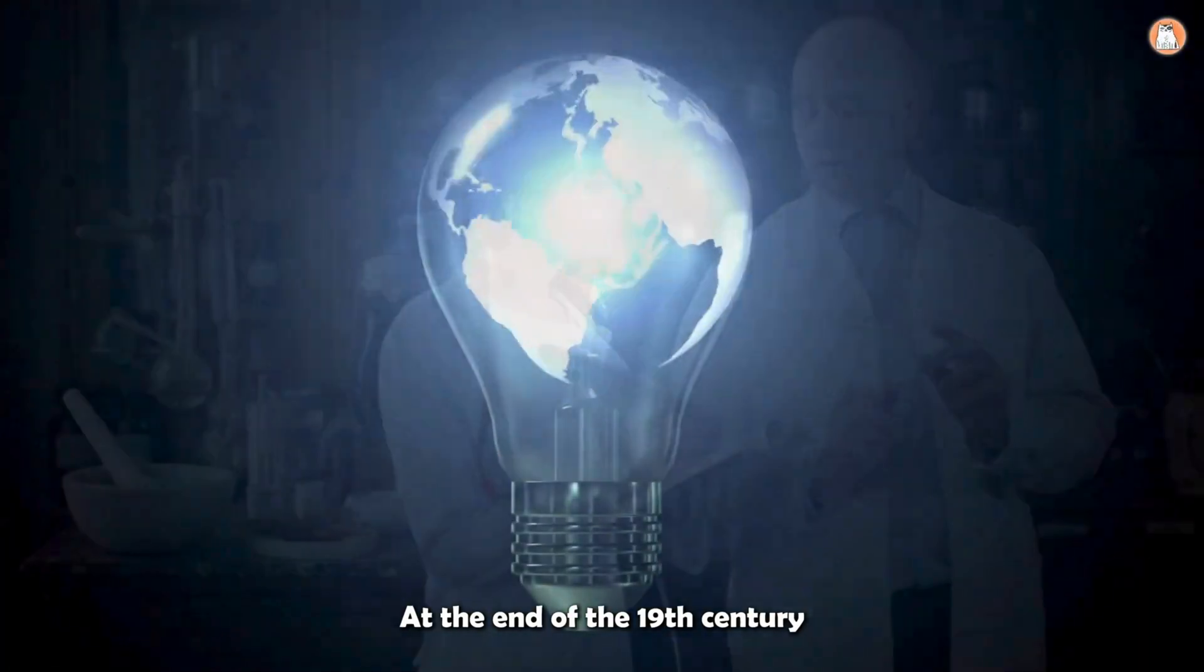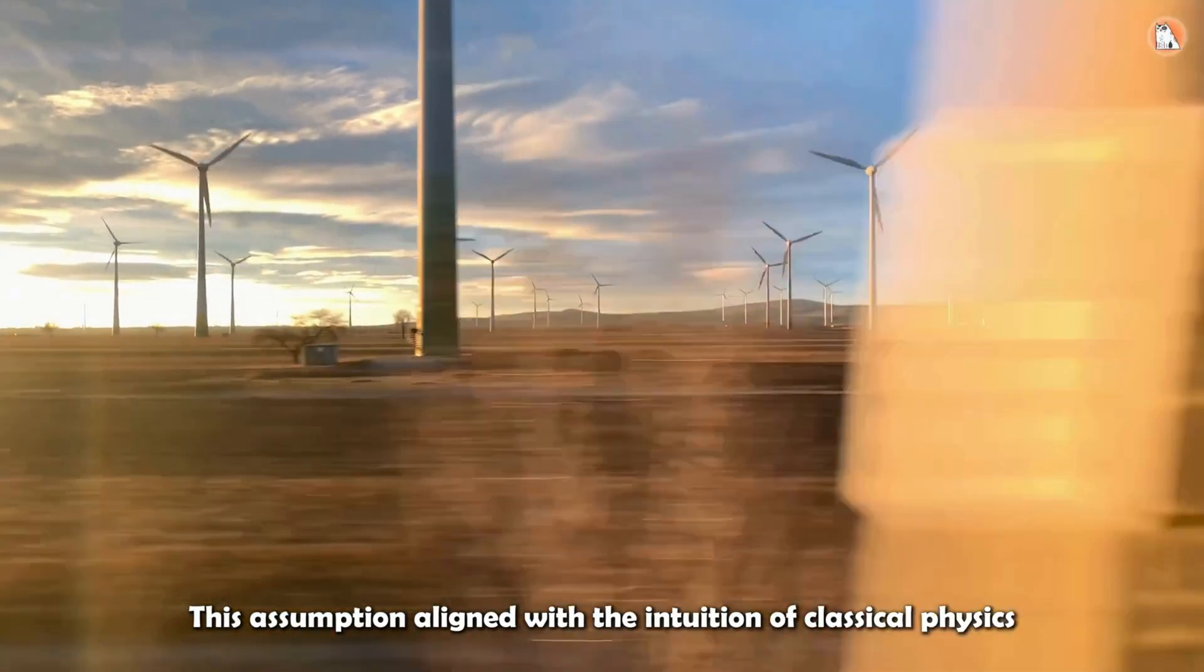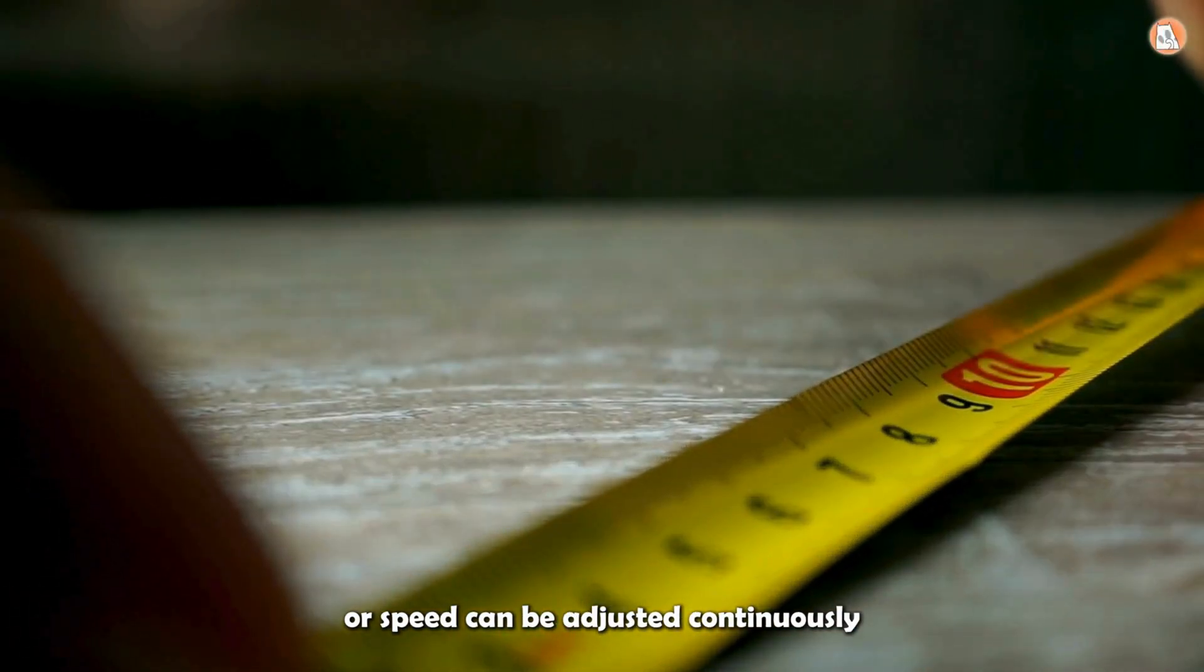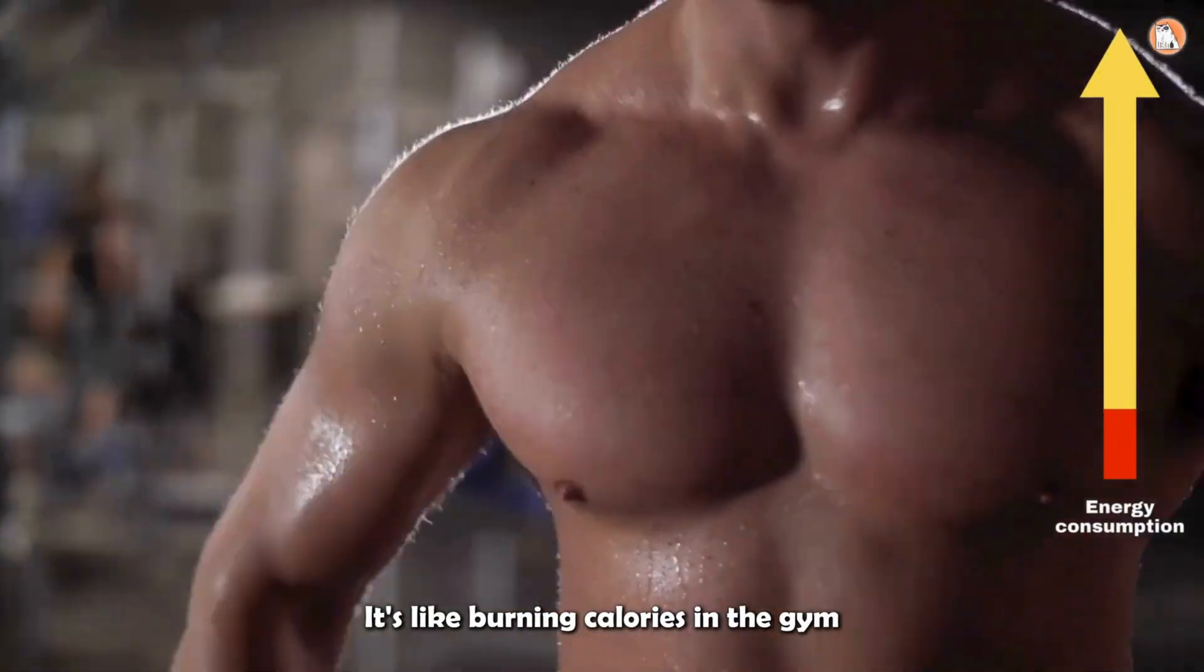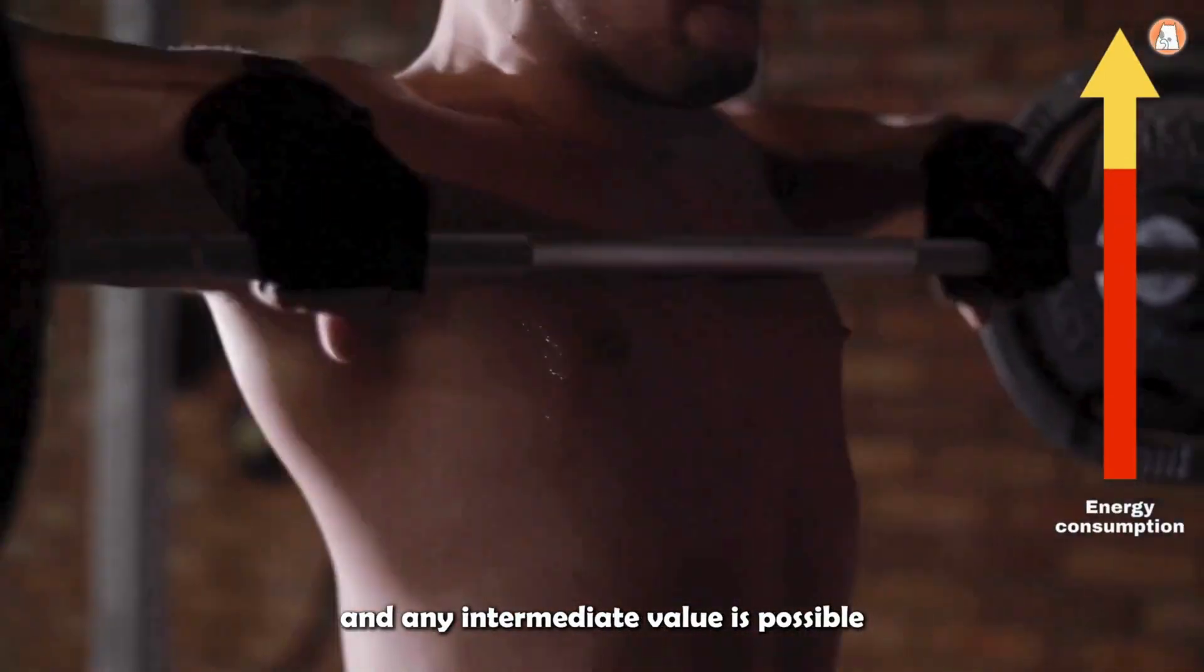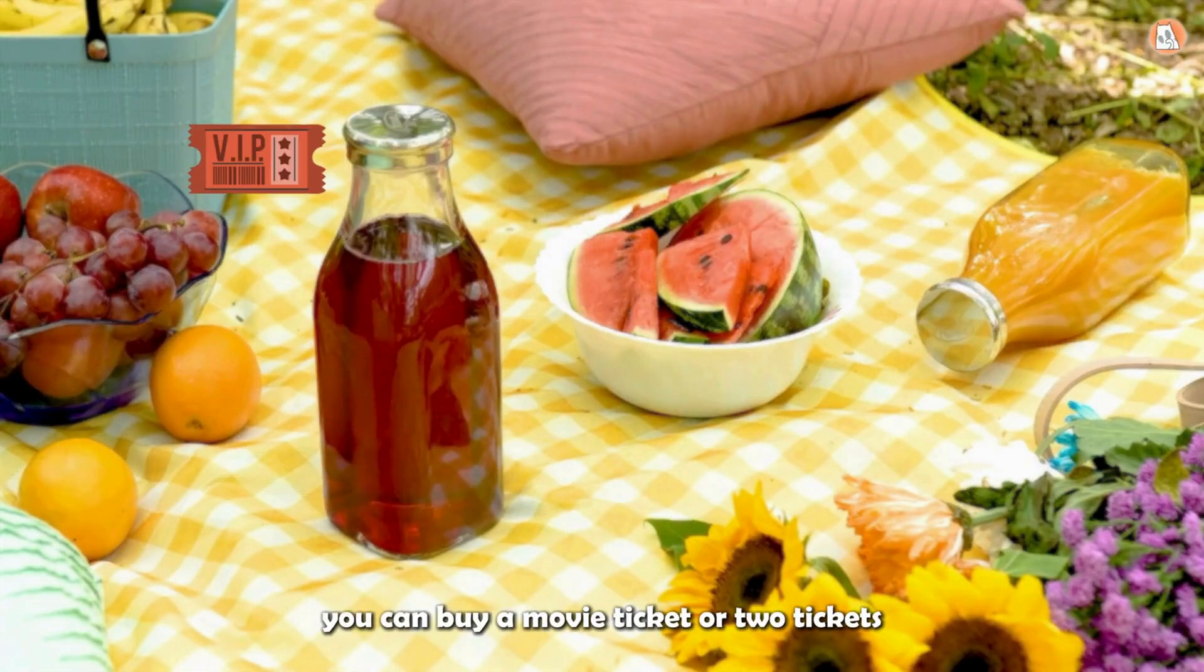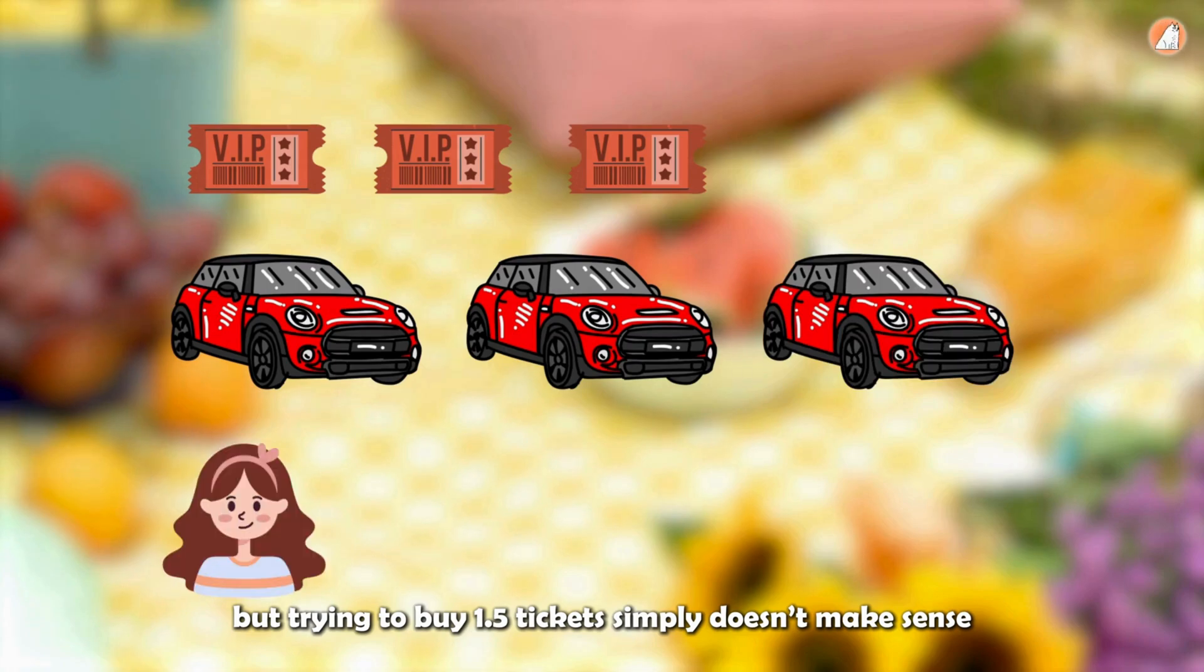At the end of the 19th century, it was widely believed that energy was a continuous physical quantity. This assumption aligned with the intuition of classical physics. For example, temperature, mass, or speed can be adjusted continuously, taking any value without restriction. It's like burning calories in the gym. From 20 kilocalories to 80 kilocalories, the process is seamless, and any intermediate value is possible. However, in everyday life, we often encounter examples of discontinuity. For instance, you can buy a movie ticket or two tickets, but trying to buy 1.5 tickets simply doesn't make sense.